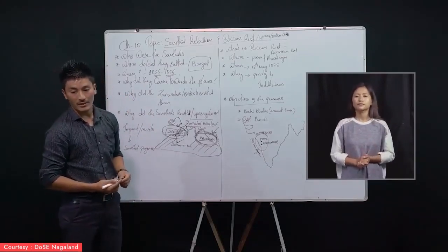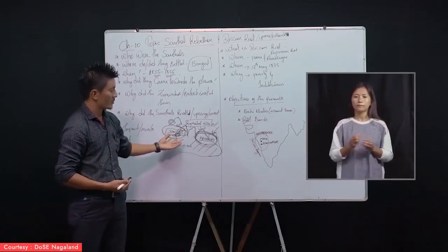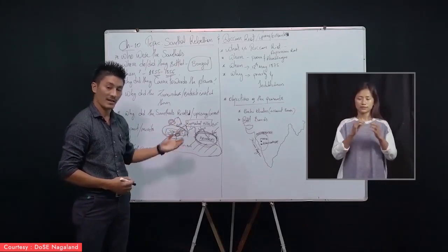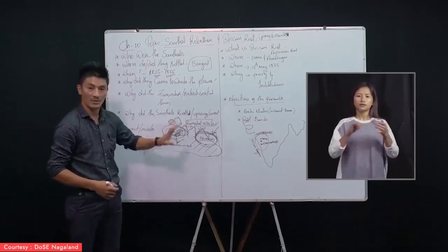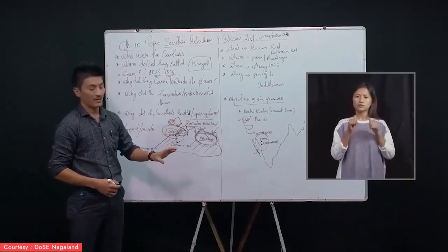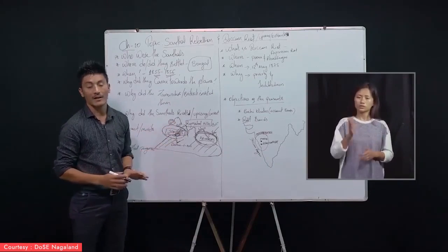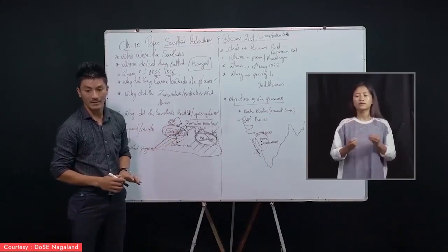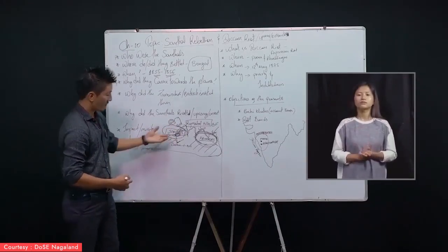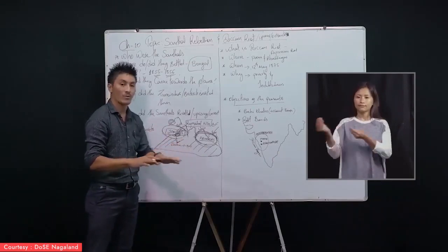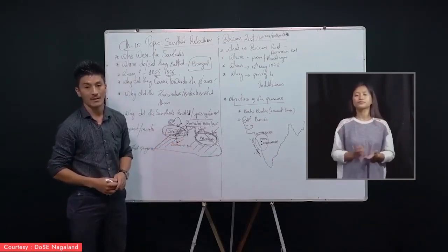One reason why the British invited the Santals is because even the Baharias were settling there at the foothill, but the British failed to turn them into a permanent agricultural community. That is why the British turned their attention towards the Santals and invited them to come towards the plain of Bengal. The Santals are good settlers and hard-working cultivators and farmers.